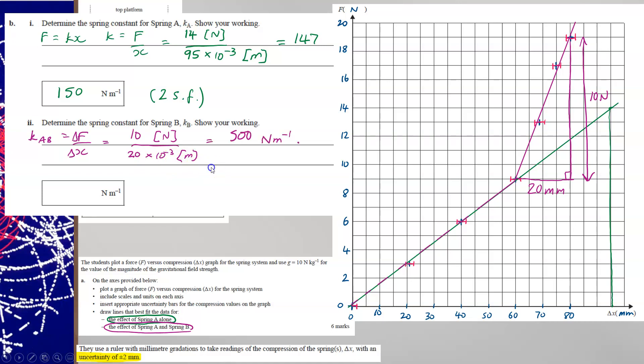And then you can subtract the spring constant of Ka to get the spring constant of just K of B, which would be 350 to two significant figures. Now there is another way to calculate the spring constant of spring B.